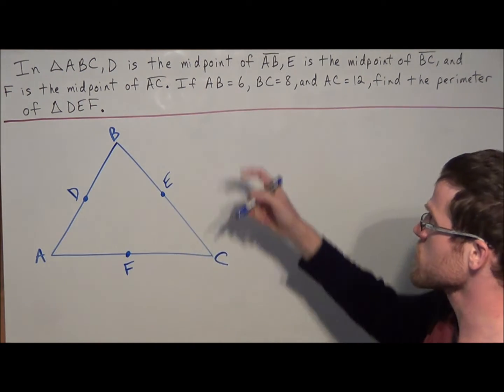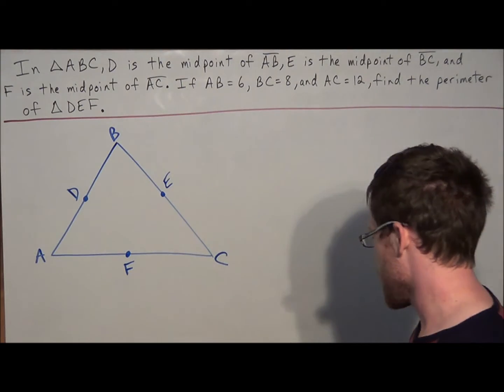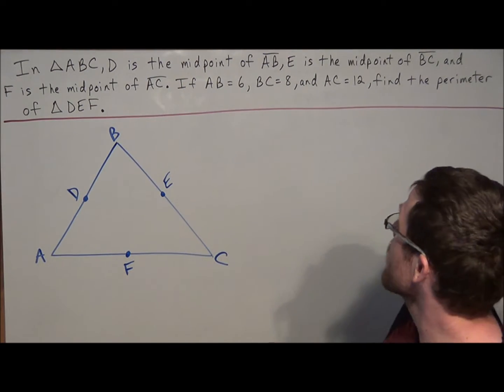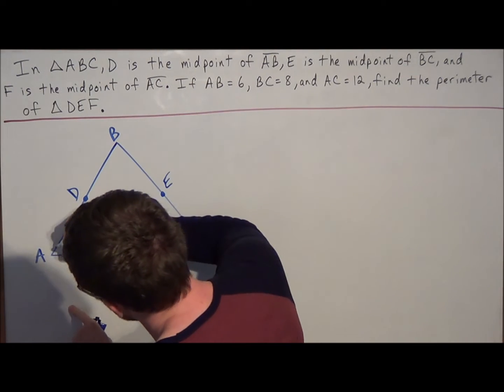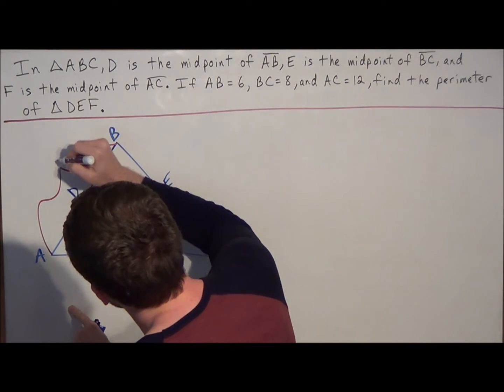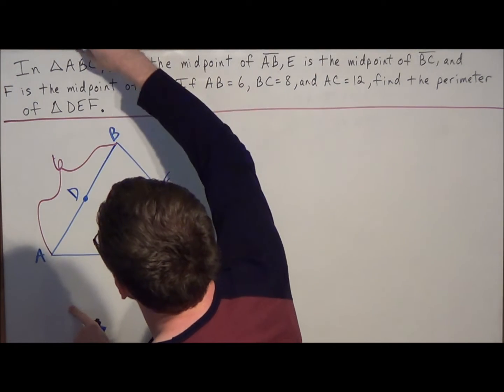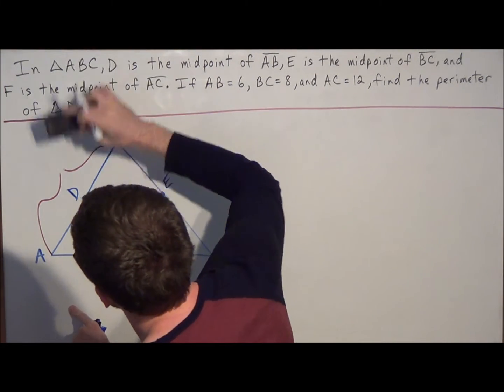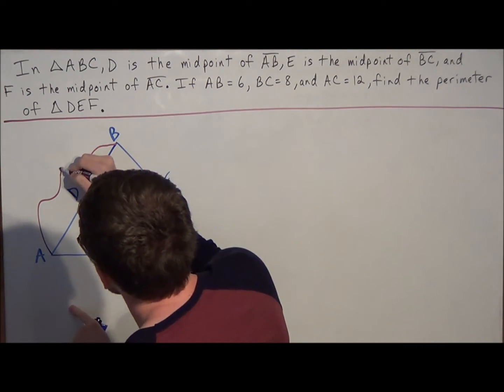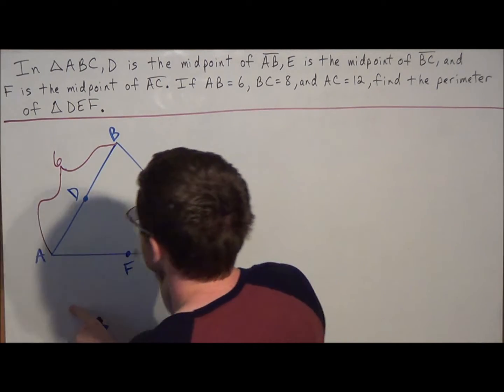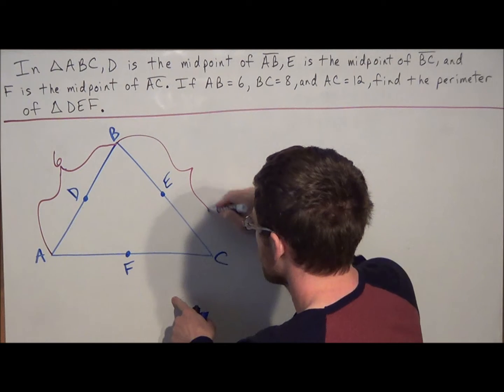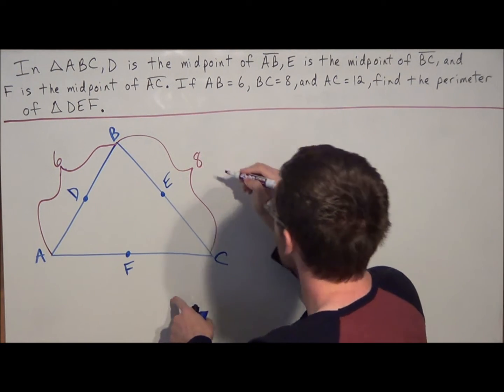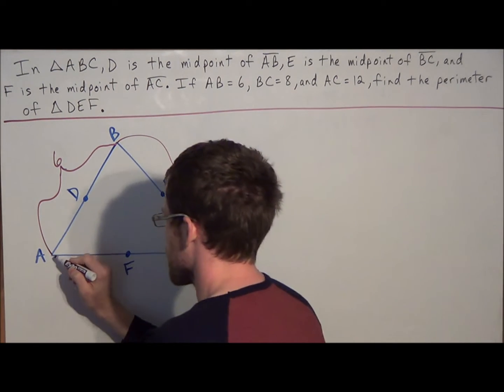The next thing we were told is the measure of the sides. So we know that AB is equal to 6. We'll make this a little bit neater. Next we know that BC is equal to 8, and finally we know that AC is equal to 12.